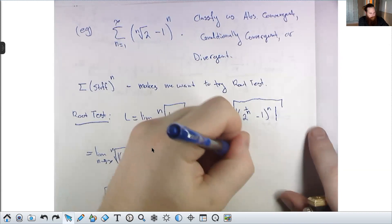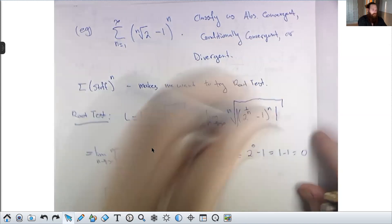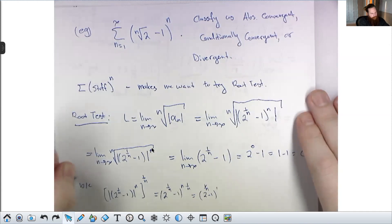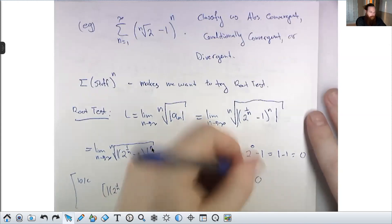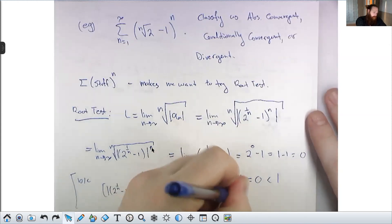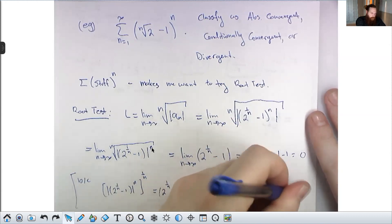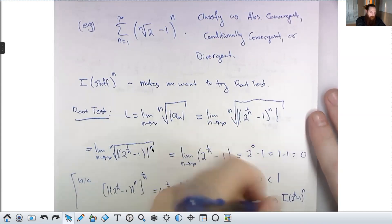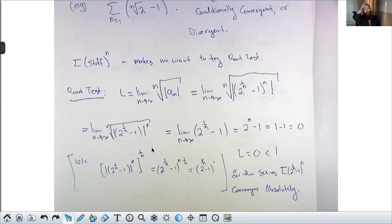So L = 0, which is less than 1. Therefore the series Σ (2^(1/n) − 1)^n converges absolutely. That's a good root test problem. The shape of the series is kind of interesting — you don't see a lot of those.